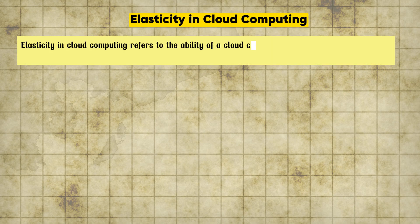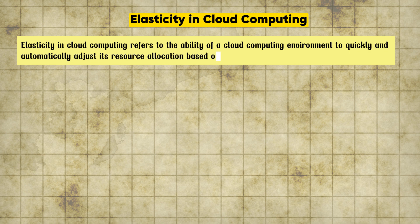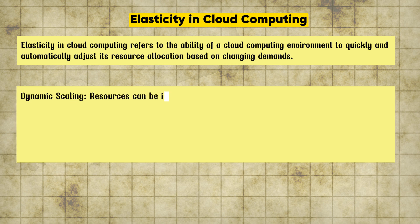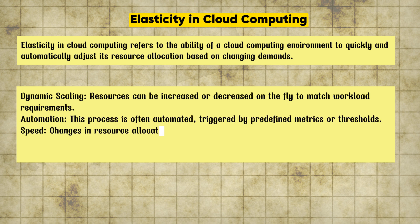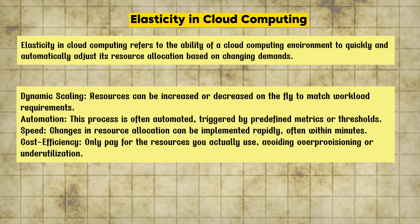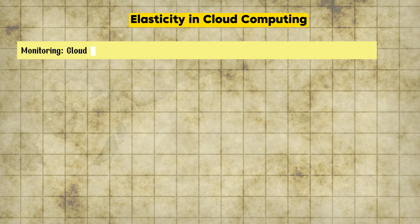The correct answer is option B, Implement Elasticity. Elasticity in cloud computing refers to the ability of the cloud environment to quickly and automatically adjust resource allocation based on changing demand. The easiest way to think about elasticity is like a rubber band — you can stretch it when you need it, and when you release it, it contracts back to its original shape. Key characteristics include dynamic scaling, automation, speed, and cost efficiency.